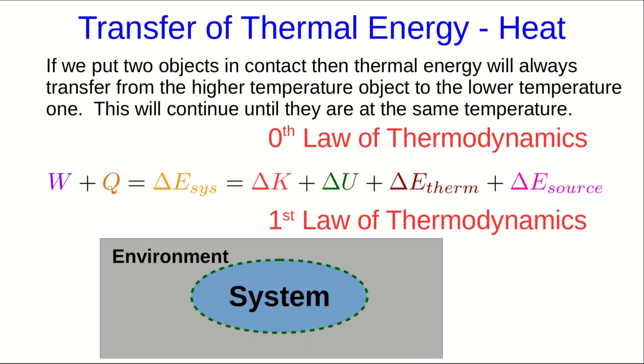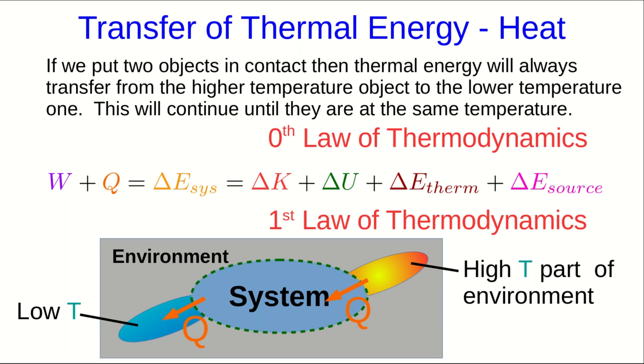When we put them together, we conclude that when a system is in contact with a hotter part of the environment, there will be a transfer of thermal energy into the system. And similarly, if the system is in contact with a cooler part of the environment, thermal energy will be transferred out. We're not only going to talk about transfer in and out of a system, though, we're also going to talk about transfer or transport through objects.